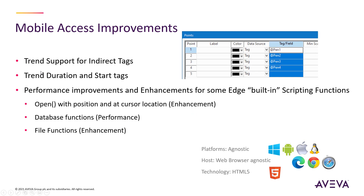For mobile access, we've added support for indirect tags in the trends, so now you have the flexibility to be able to change the tags or the pens on the trend during runtime. That adds just that very complete flexibility on the trends, being able to change those during runtime. We've also given the ability to use tags to change the duration and the start time on the trends, so that gives you that flexibility to allow you to view the data that you want to view when you want to view it.